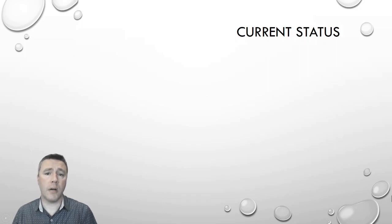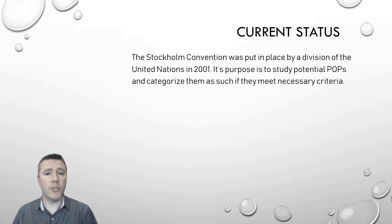Thanks to the Stockholm Convention, there is an international system in place for the classification of persistent organic pollutants. It was first put in place by a division of the United Nations in 2001, and its purpose was to study what might be persistent organic pollutants and then ultimately classify them so that they could be tracked.